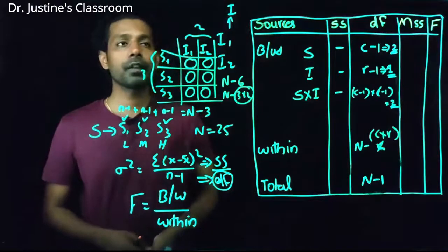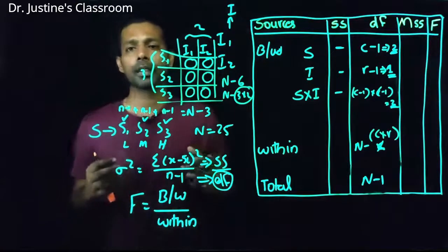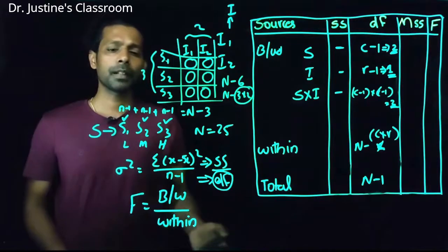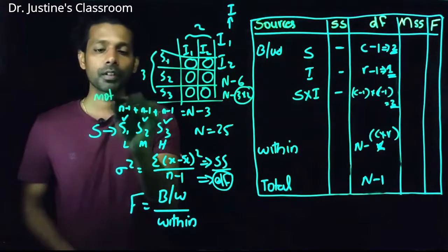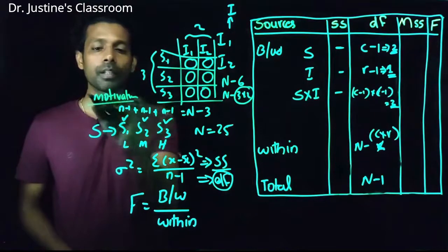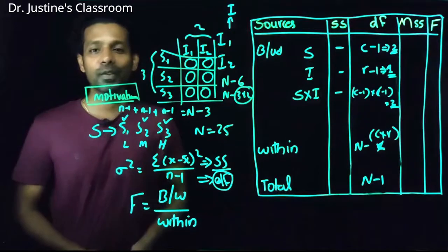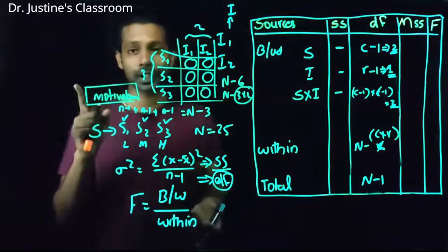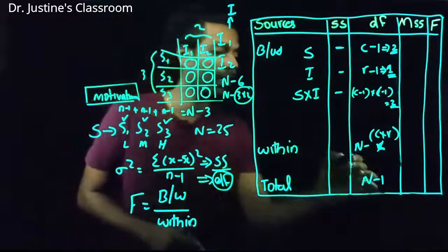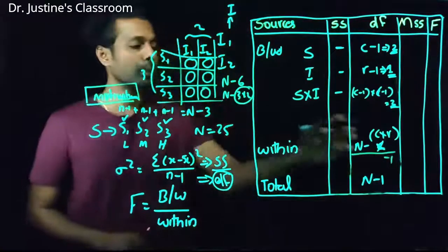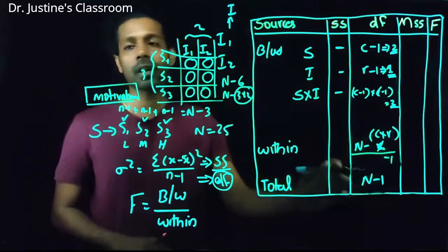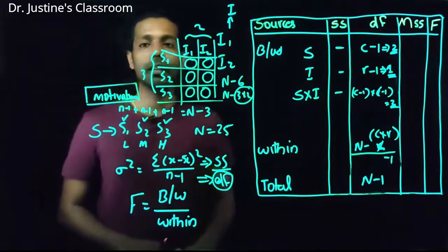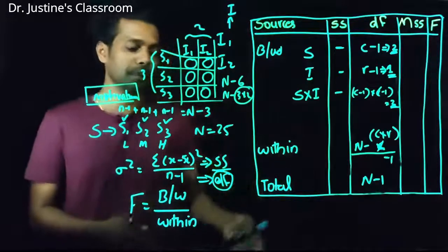What about ANCOVA? ANCOVA is a statistical procedure to control an extraneous variable. For example, assume you have measured the motivation of employees as an extraneous variable. You need to control it. The degree of freedom changes in the within-group condition: subtract 1 from the usual within-group df. If you have two extraneous variables, subtract 2.